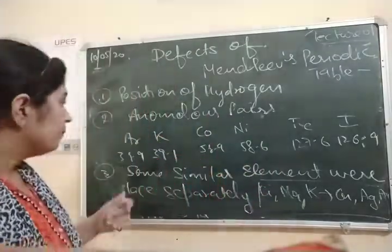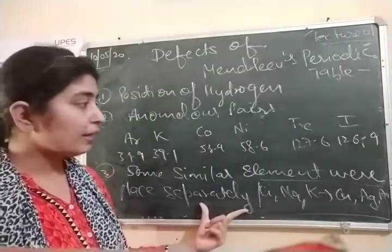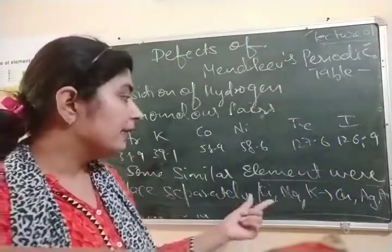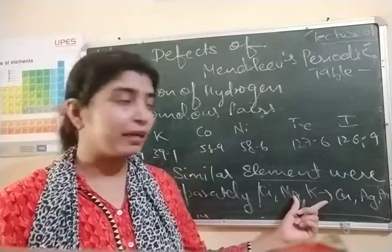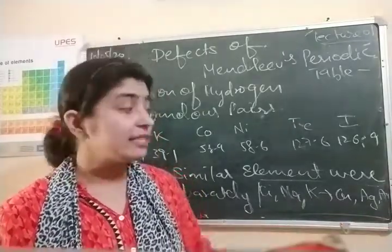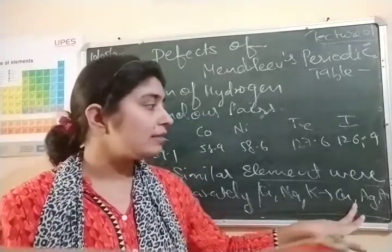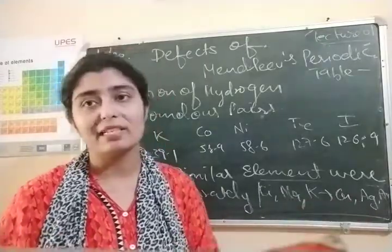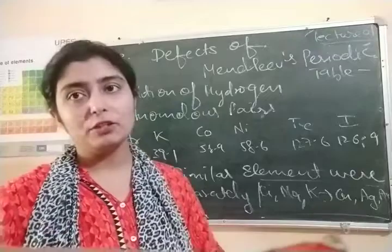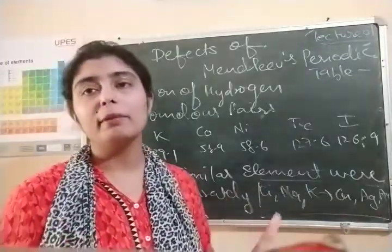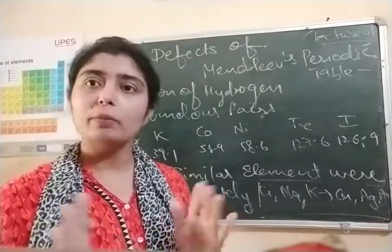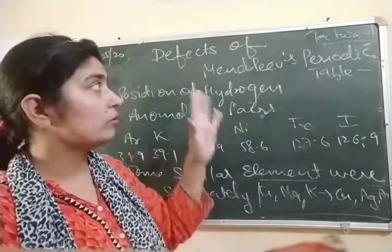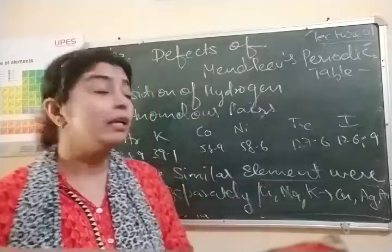Third limitation: similar elements were placed separately. For example, lithium, sodium, potassium were placed in the same group as copper, silver, and gold, but copper-silver-gold's properties don't match with lithium-sodium-potassium. So many elements that are not similar were placed together, even though their properties don't match. This is also a limitation of Mendeleev's periodic table.